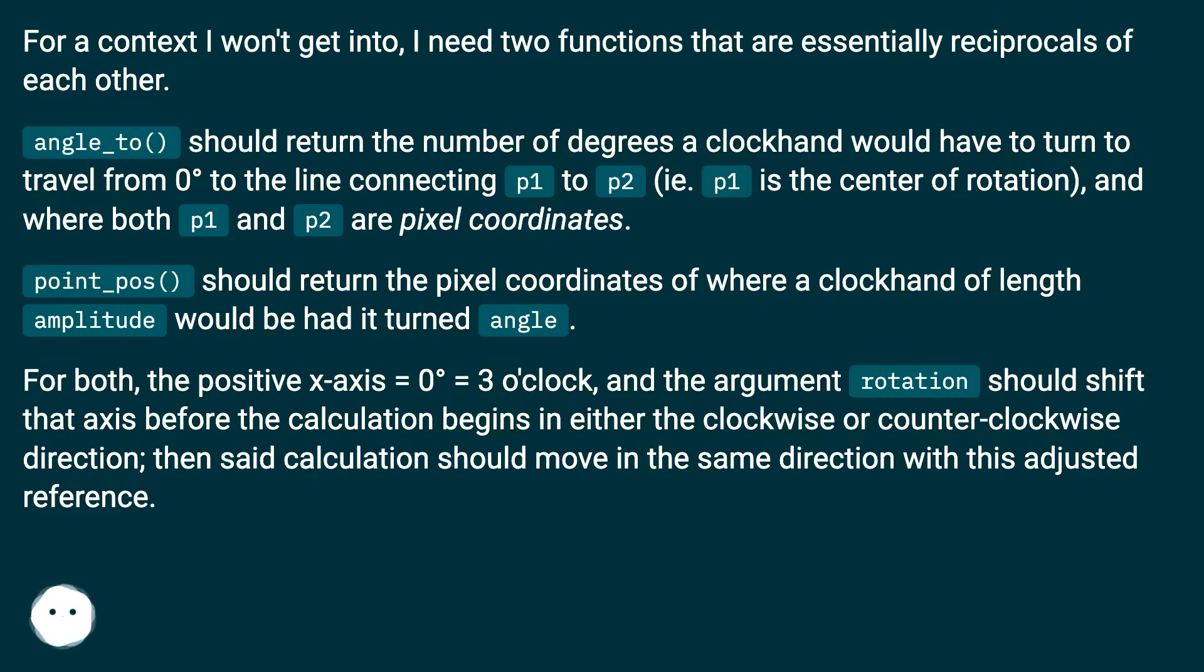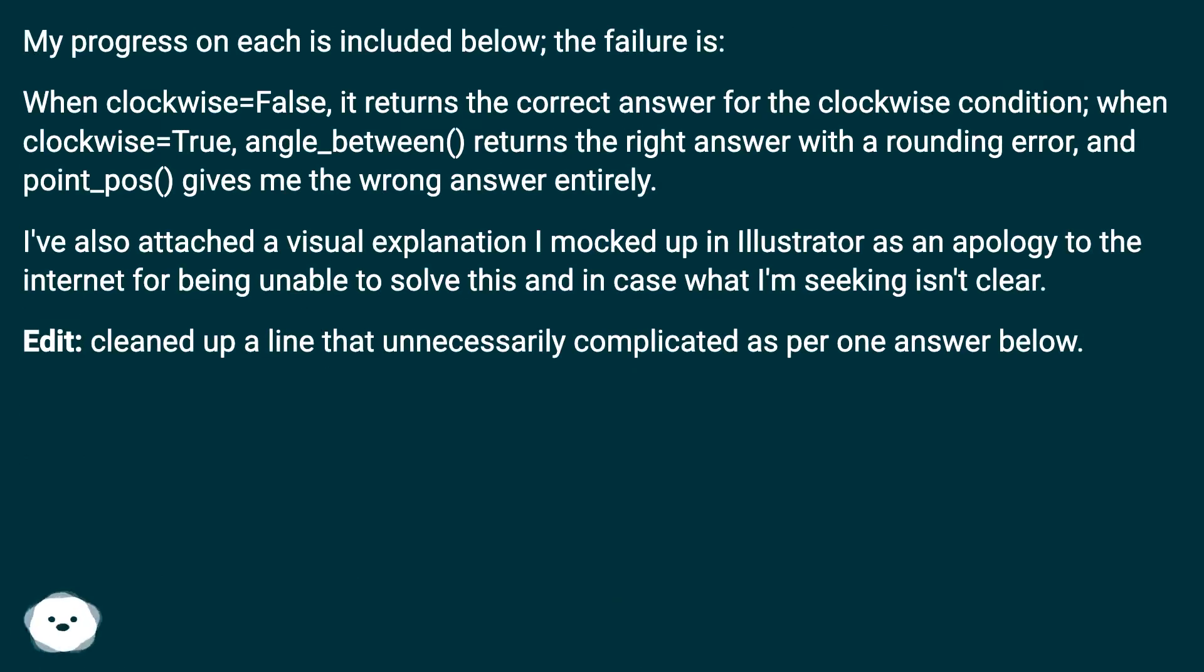Then said calculation should move in the same direction with this adjusted reference. My progress on each is included below. The failure is: when clockwise=False, it returns the correct answer for the clockwise condition; when clockwise=True, angle_between() returns the right answer with a rounding error.